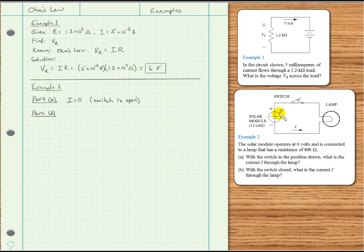So that's true with the switch closed. What is the current I that flows through the lamp? So, once again, given that the voltage is equal to 6 volts, and also that the resistance in the circuit, which in this case is presented by the lamp, is 800 ohms, we want to find the current I flowing through the load. And what do we know? Well, once again, we know Ohm's Law.